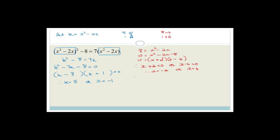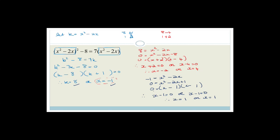Have we finished? No, we haven't, because we still have to substitute k equals minus 1. So we go: minus 1 is equal to x squared minus 2x, therefore 0 is equal to x squared minus 2x plus 1. The coefficient of x squared is 1, and since it's a plus sign, both signs are minus. The only factors of 1 are 1 and 1, so x minus 1 equals 0 or x minus 1 equals 0, therefore x equals 1. So again we have four possible solutions - two equal and two unequal, but all real and rational.